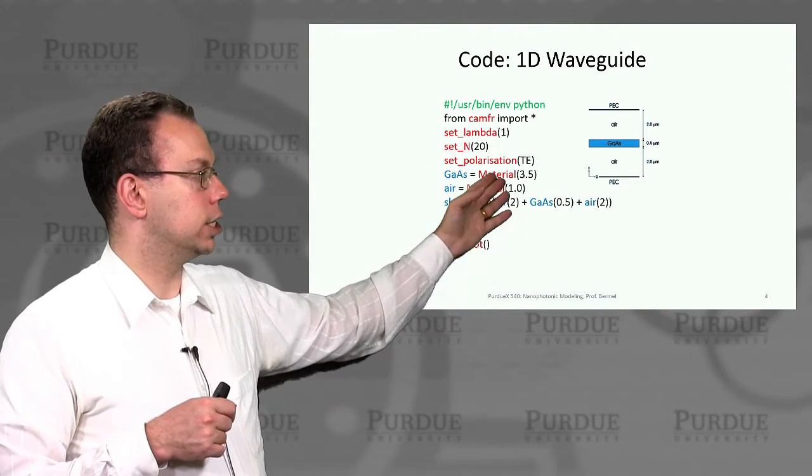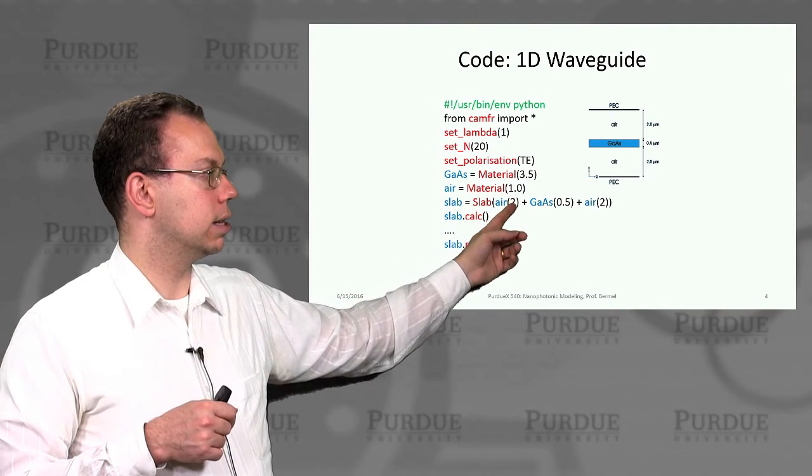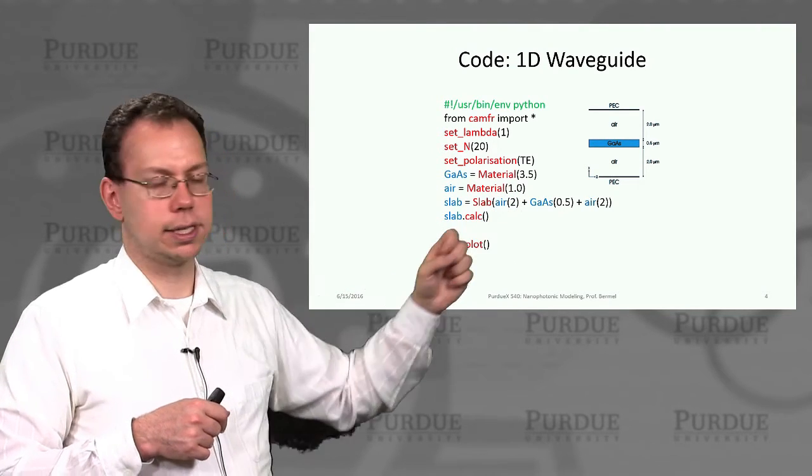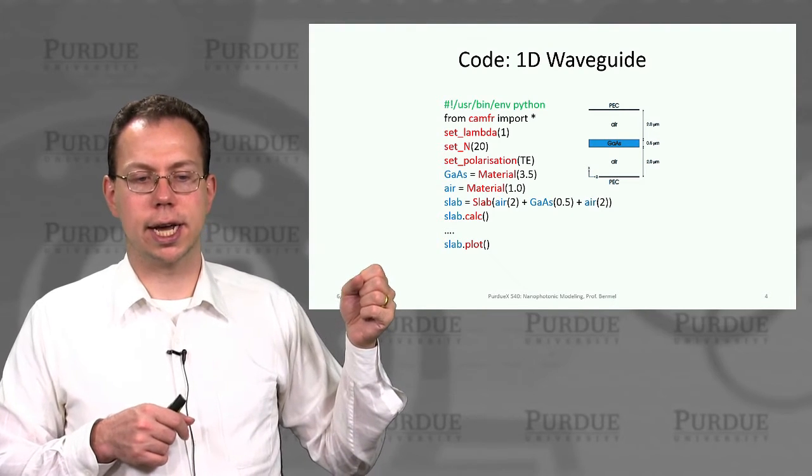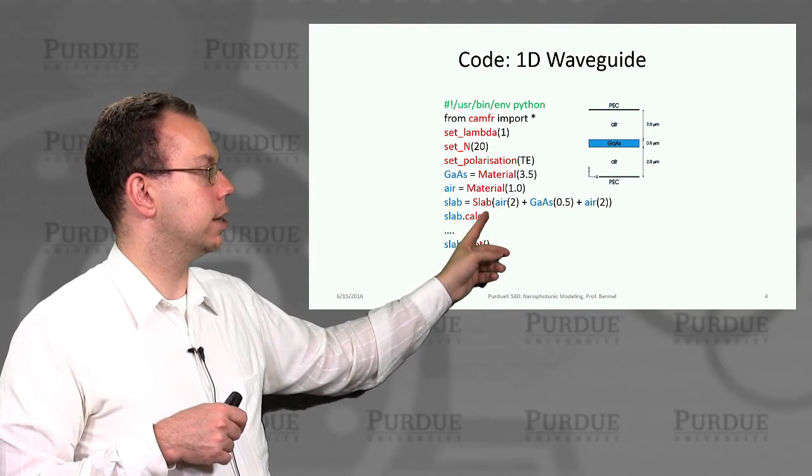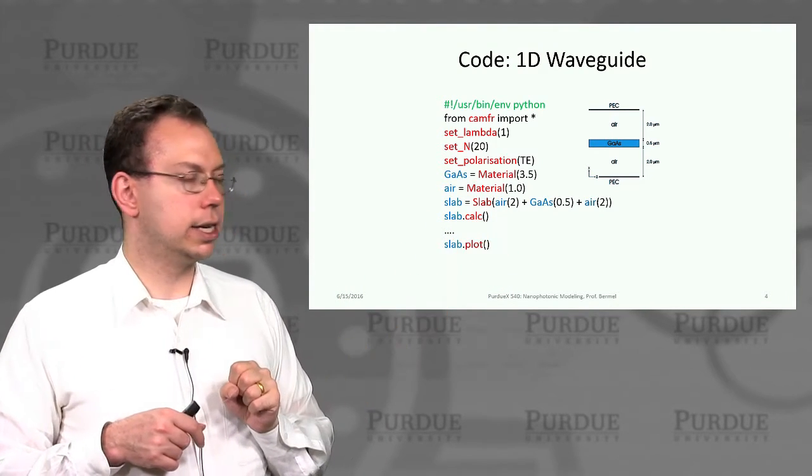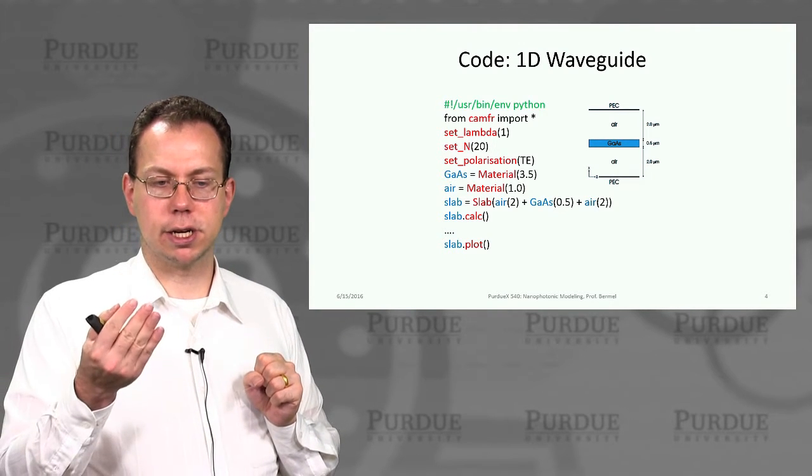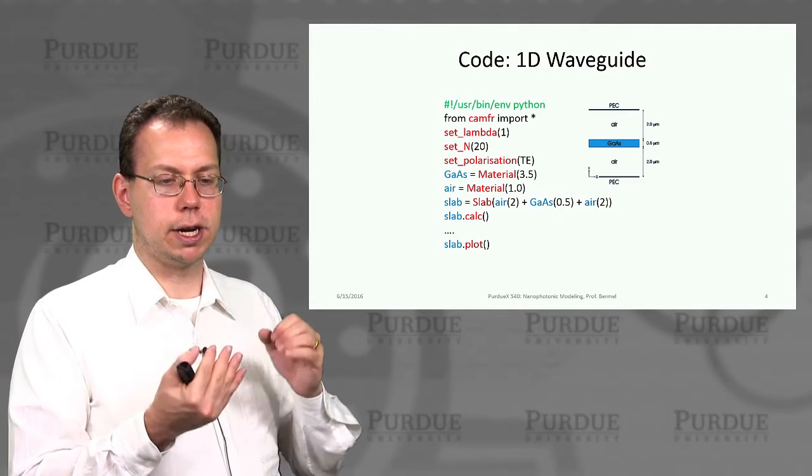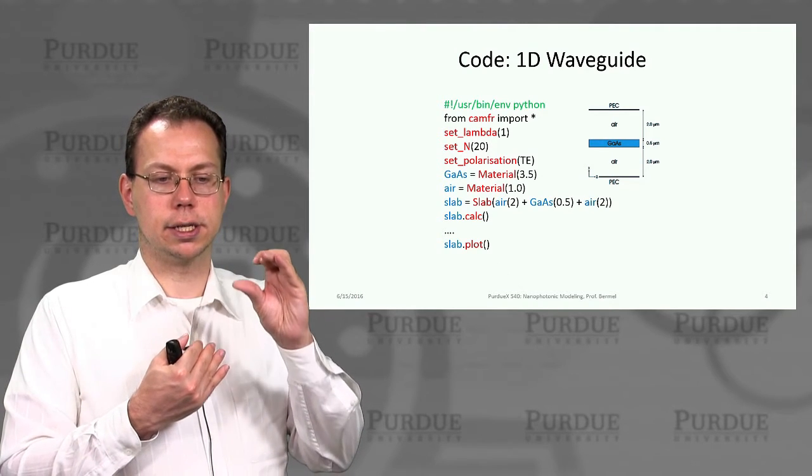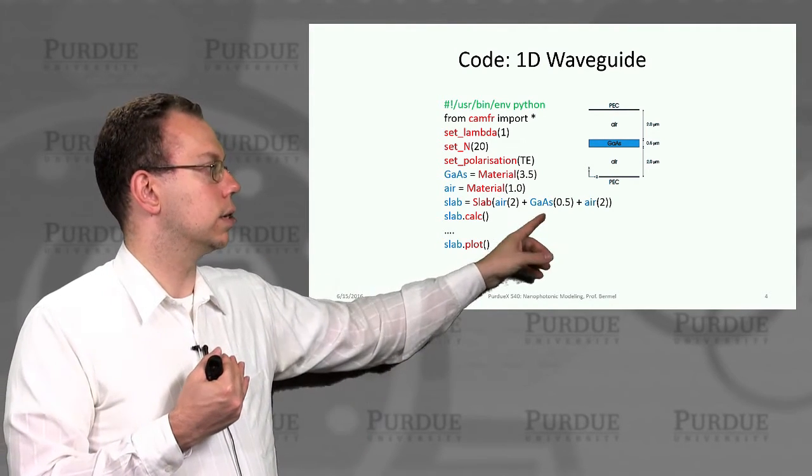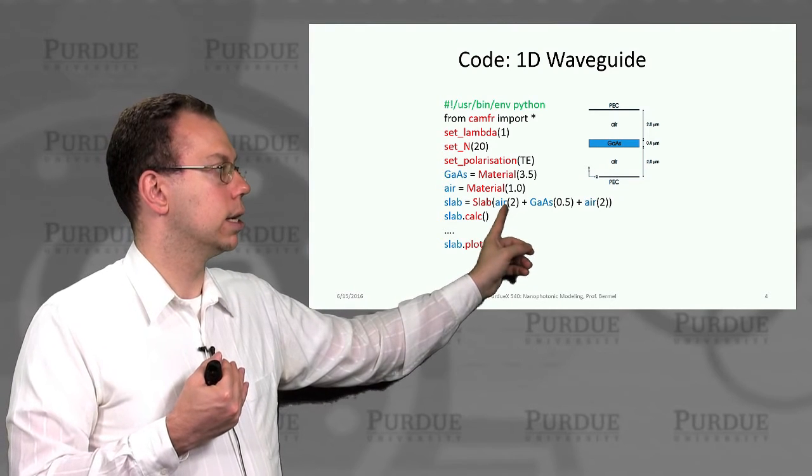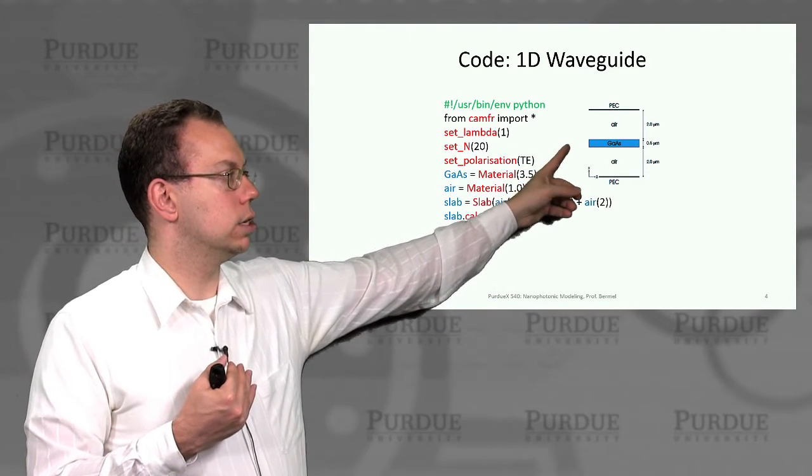And then set n is basically the number of eigenmodes that are allowed in the system. Set the polarization, that should be obvious, setting the materials is also pretty obvious. The number we're providing is just the real index. But then this is slightly less obvious when we create a slab. So in this case, what we're doing is we're saying, based on the materials we chose, then we want to create layers that have different thicknesses. And so air 2 basically says air region of thickness 2 microns.